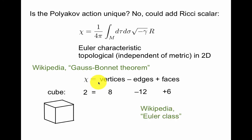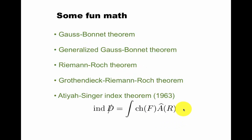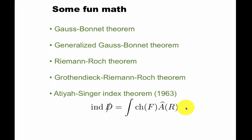For example, Euler class is a natural generalization of this object to vector bundles, and there's a lot of fun math here. The generalized Gauss-Bonnet theorem, the Riemann-Roch theorem, and the Atiyah-Singer index theorem.